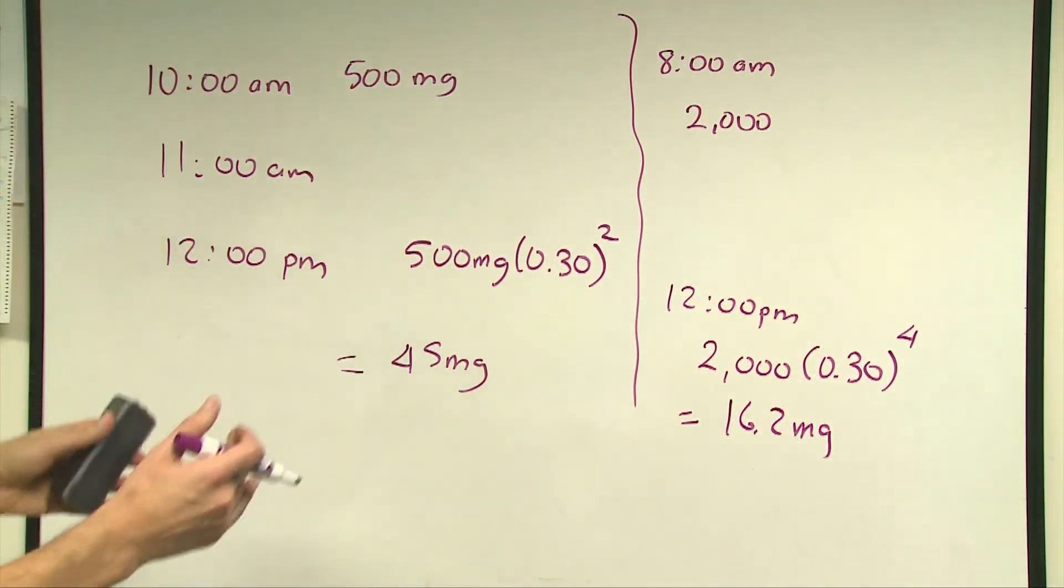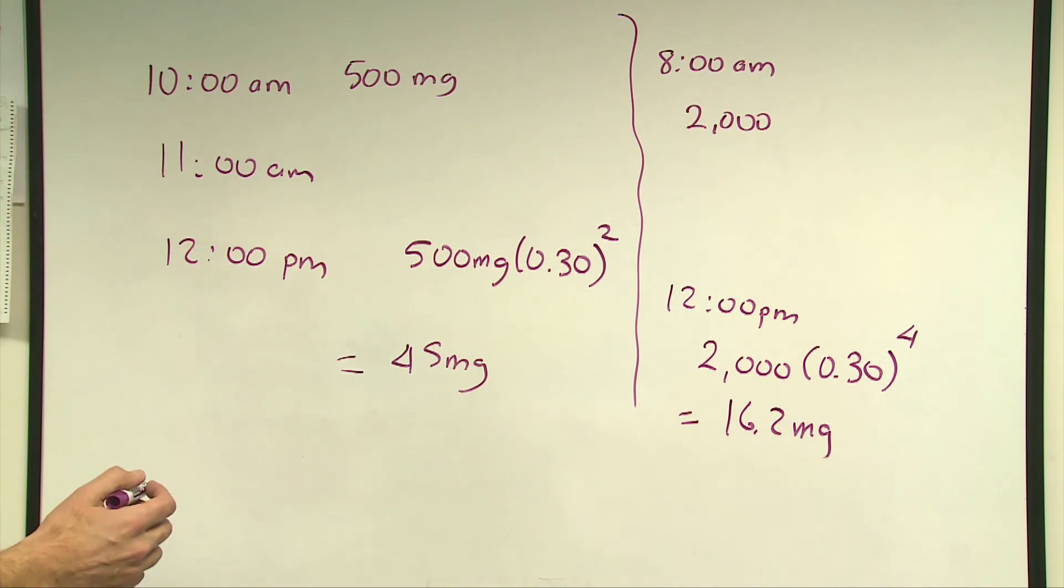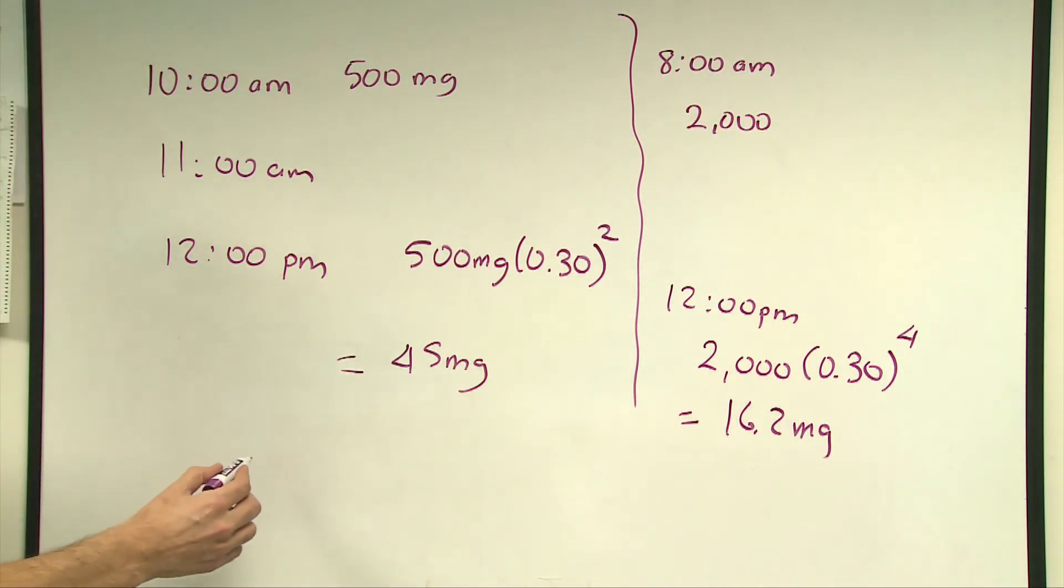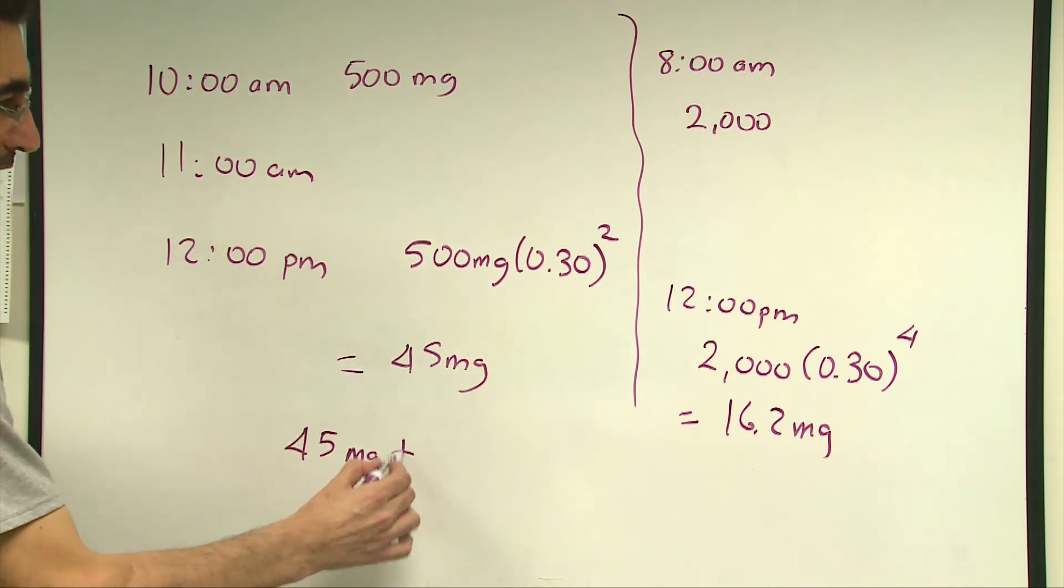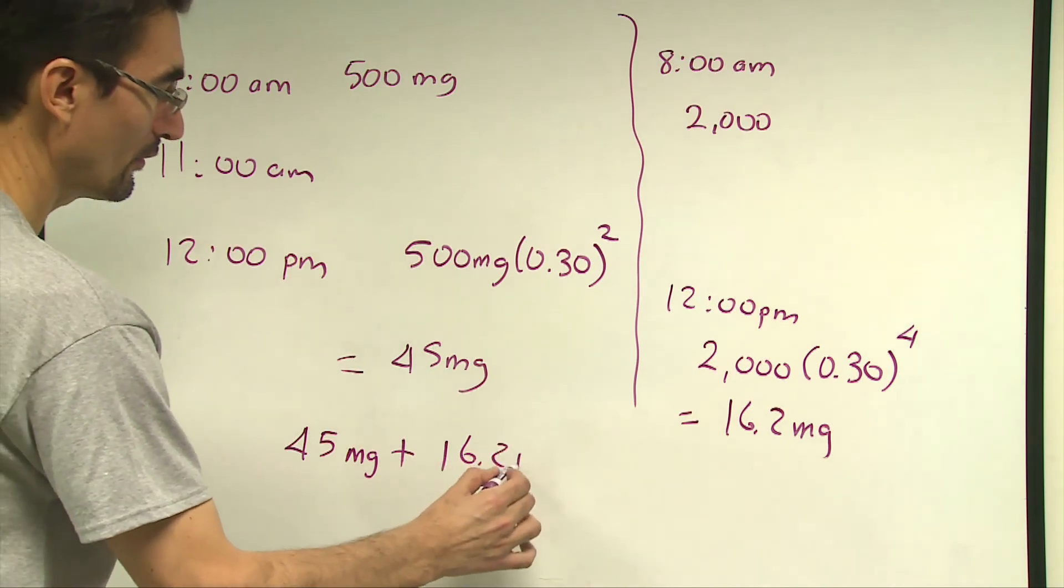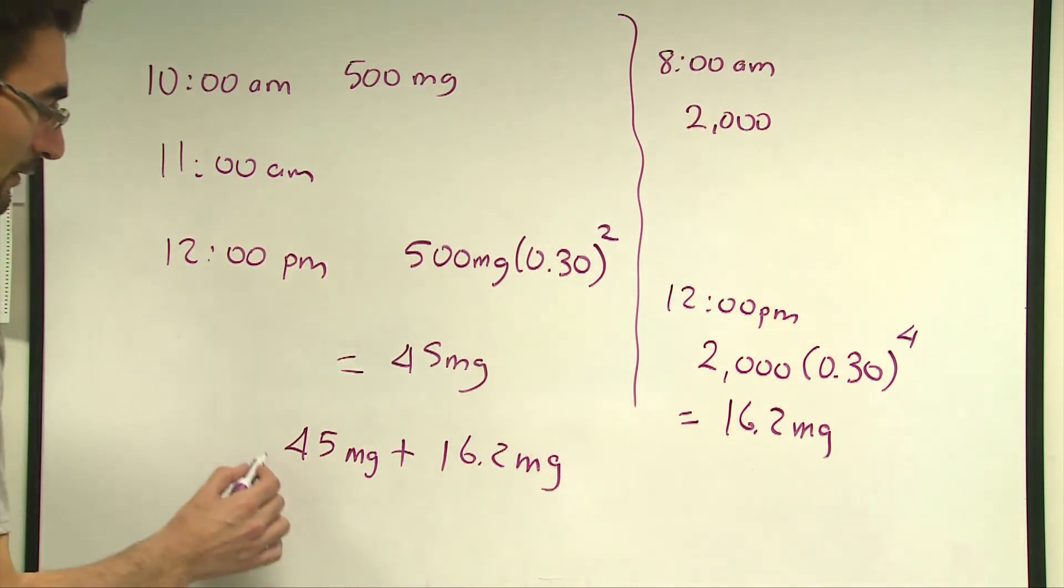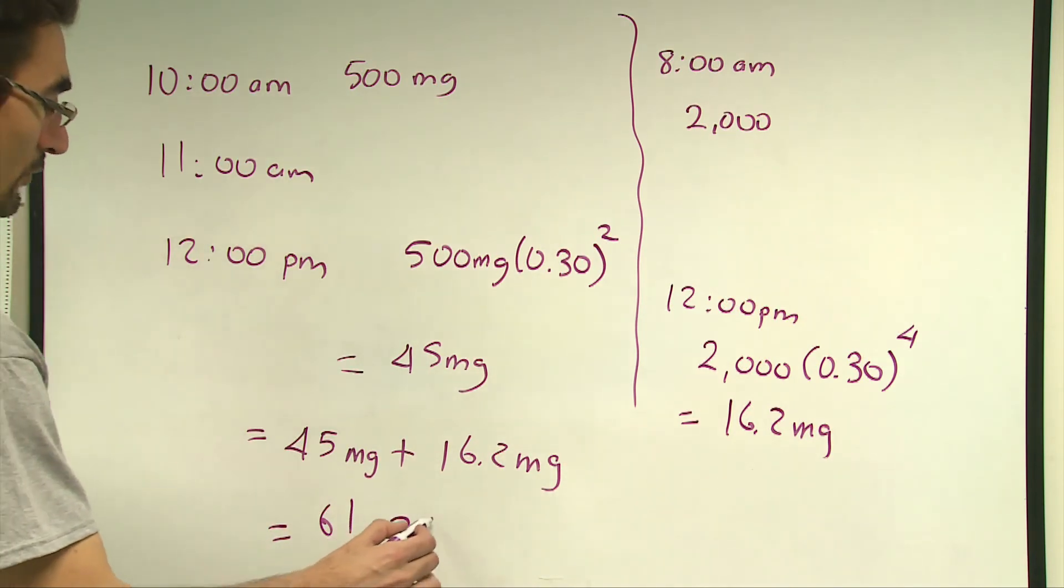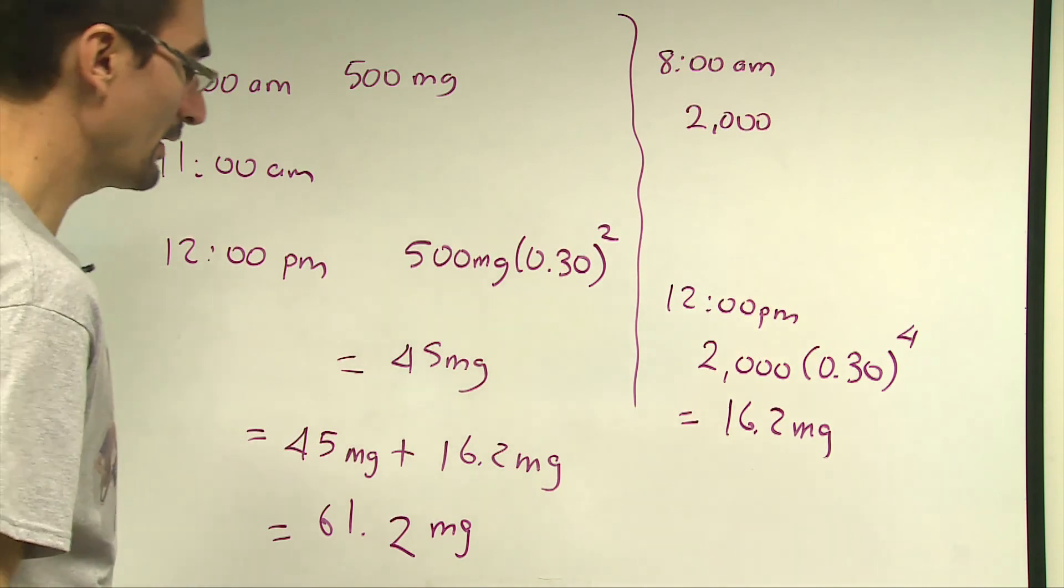And finally, what I need to do is, I need to add these 2 amounts of medicine at 12 noon, 45 mg plus 16.2 mg, which will give us 61.2 mg in the patient's body at 12 noon.